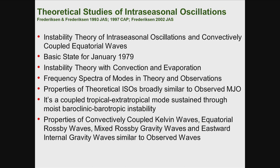I will show the properties of a theoretical intra-seasonal oscillation that is broadly similar to the observed MJO. It is a coupled tropical-extratropical mode sustained through moist baroclinic-barotropic instability. The wavenumber, frequency, and dispersion relationship are comparable with the coupled Kelvin wave, Rossby wave, mixed Rossby-gravity wave, and other waves near the equator.